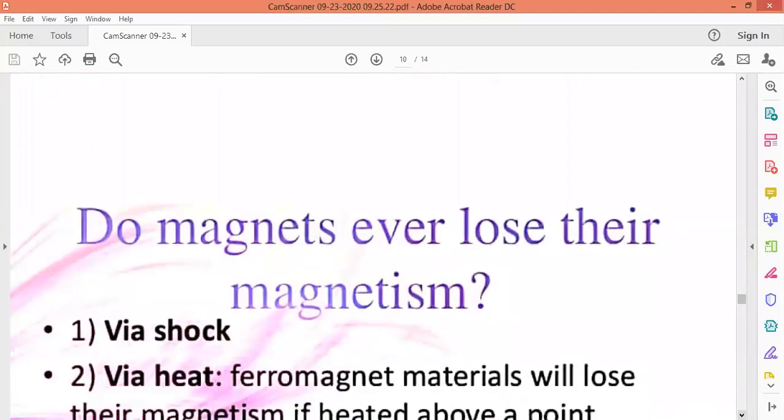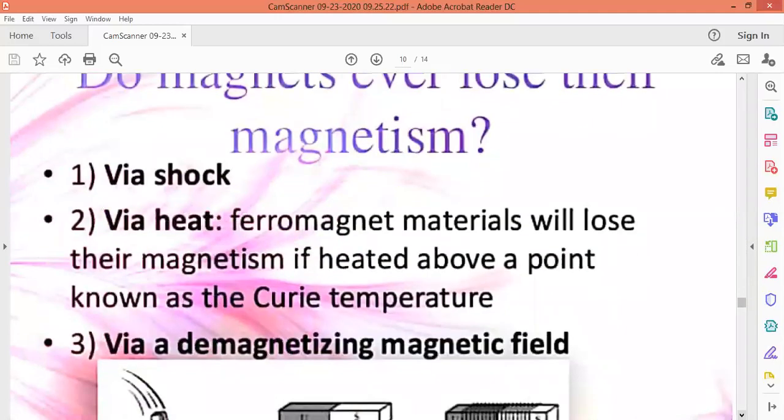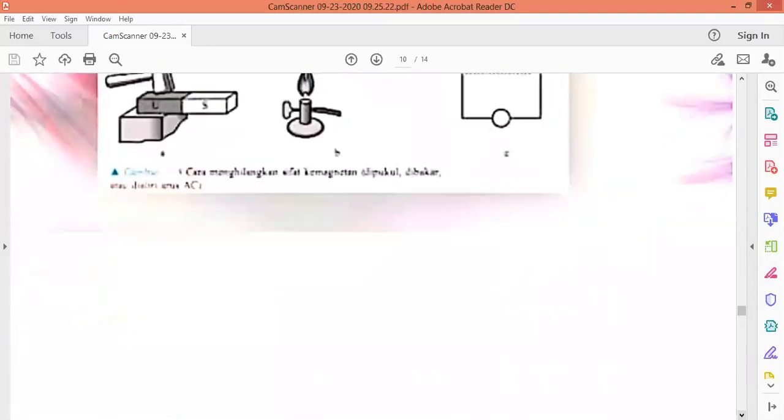Do magnets even lose their magnetism? Yes, via shock, via heat, and via demagnetizing material. Now basically we will focus on heat. What do we do with ferromagnetic material? We heat them. When they heat up to certain temperatures, they will lose their magnetism and convert into paramagnetic material. The temperature is known as Curie temperature, and the material changes their properties to paramagnetism.